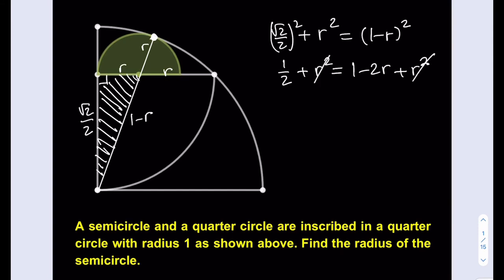r squared cancels out. I can bring this negative 2r to the left hand side and subtract the 1 half. That gives me 1 minus 1 half, which is 1 half. If I divide both sides by 2, I get r equals 1 fourth.